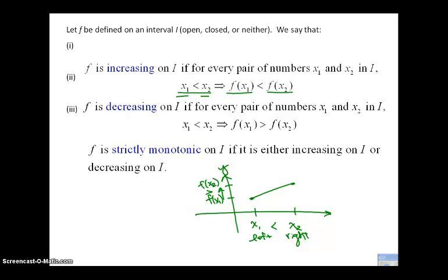The function is decreasing on the interval if for every pair of numbers x₁ and x₂ in the interval with x₁ < x₂, the output f(x₁) is greater than f(x₂). We say the function is strictly monotonic on the interval if it is either increasing only or decreasing only over the entire interval — what I've drawn in green and blue evidences only one type of monotonicity over the entire interval.